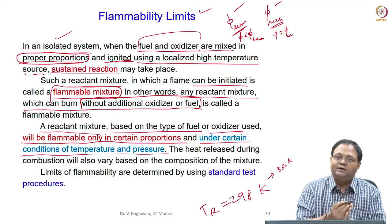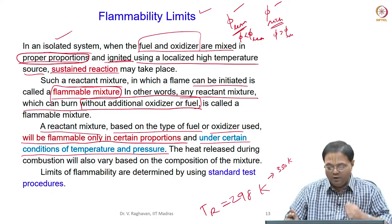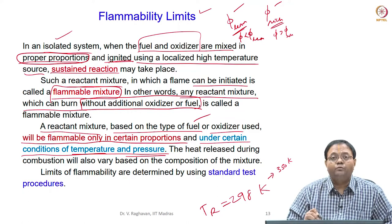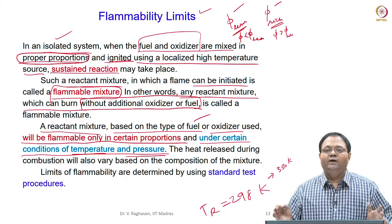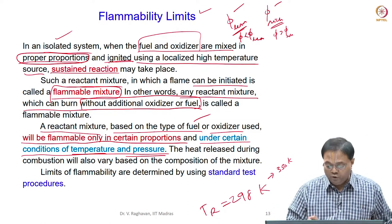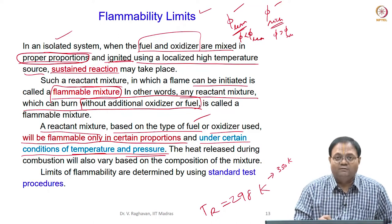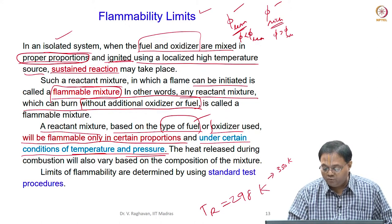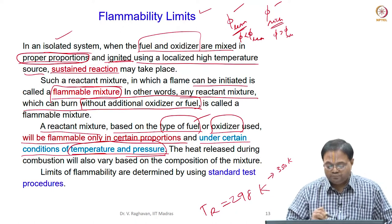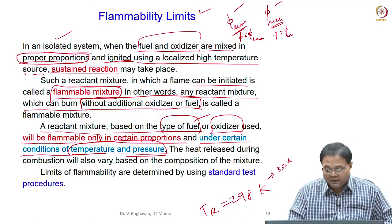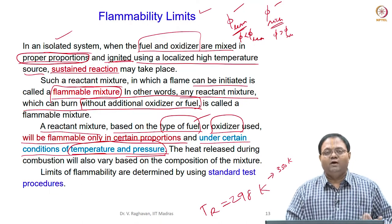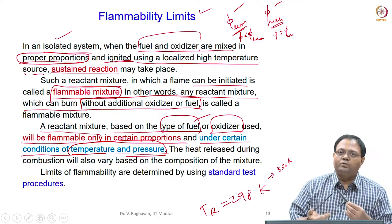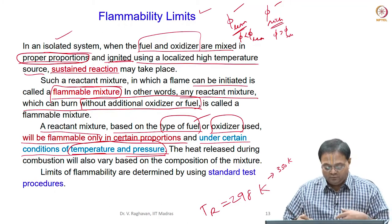At higher temperature, you can burn the mixture in slightly leaner and slightly richer conditions. Based upon temperature, pressure, and fuel type — for instance, switching from methane to hydrogen — the flammability limits will widen. The heat release during combustion will also vary, because going from lean to rich and further rich changes the heat release, as is known to us.